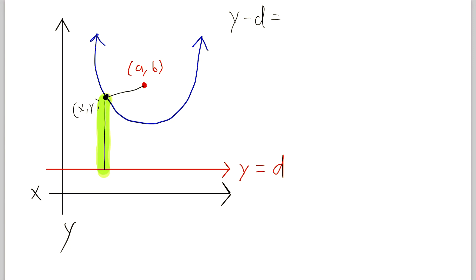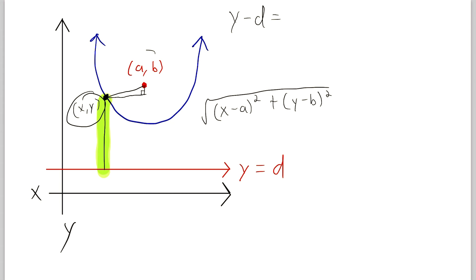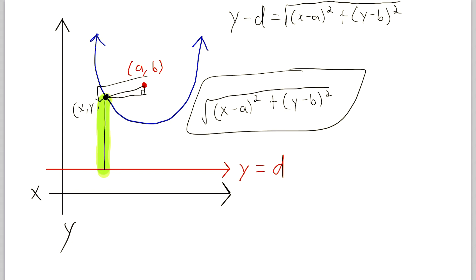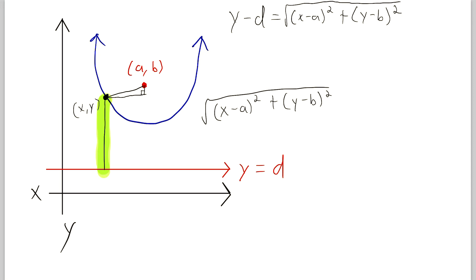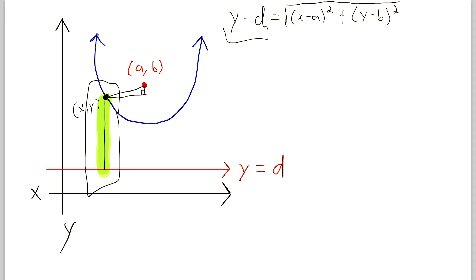To find the length of the second line segment, all we need is the distance formula, which is really just the same as the Pythagorean theorem. The distance from the point (x, y) to the point (a, b) is the square root of (x minus a) squared plus (y minus b) squared. So we have: y minus d equals the square root of (x minus a) squared plus (y minus b) squared. We know they're equal because of the properties of the focus and directrix — any point on the parabola is as far from the focus as it is from the directrix.